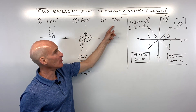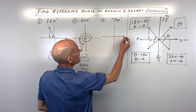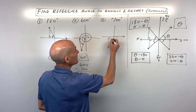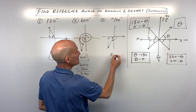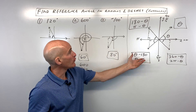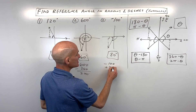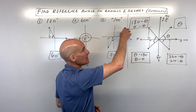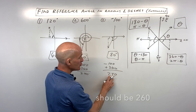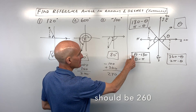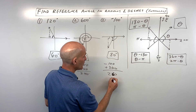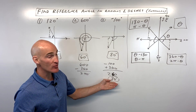For the third example, we have a negative angle: negative 100. That means we're going clockwise — 90 plus 10 more puts you at negative 100. If we drop a perpendicular, how many more degrees to reach the x-axis? That's 80 degrees — not negative 80, because the reference angle is always positive and always between 0 and 90. If you prefer formulas, add 360: negative 100 plus 360 is 260 degrees, which is in the third quadrant. Then 260 minus 180 is 80 degrees — same result.